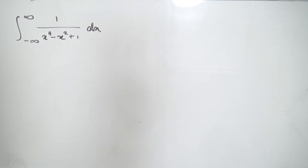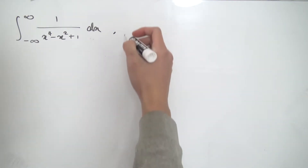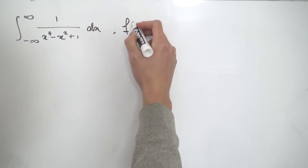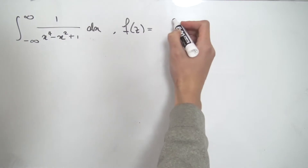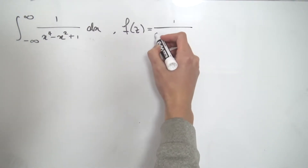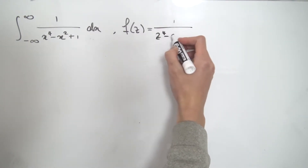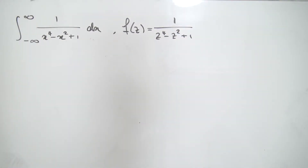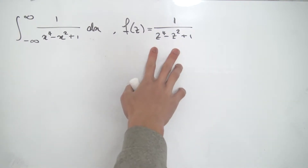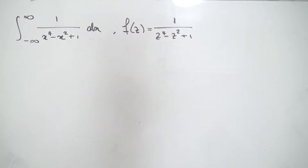Welcome back everybody. Today we're going to be using some complex analysis to evaluate this improper integral. To get started, we're going to define a new complex-valued function, let's call it f of z. We're going to let it equal this integral but replace all the x's with z, so we have z to the four minus z squared plus one. We're changing from real-valued inputs to complex-valued inputs, and we'll be integrating this along a contour using Cauchy's residue theorem.